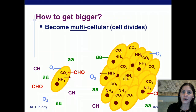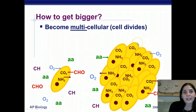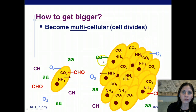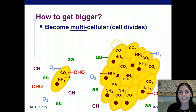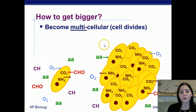So how do organisms get bigger? They become multicellular, or the cells divide. This allows different substrates, components, salts, and electrolytes to be passed into and out of many smaller cells, increasing efficiency.